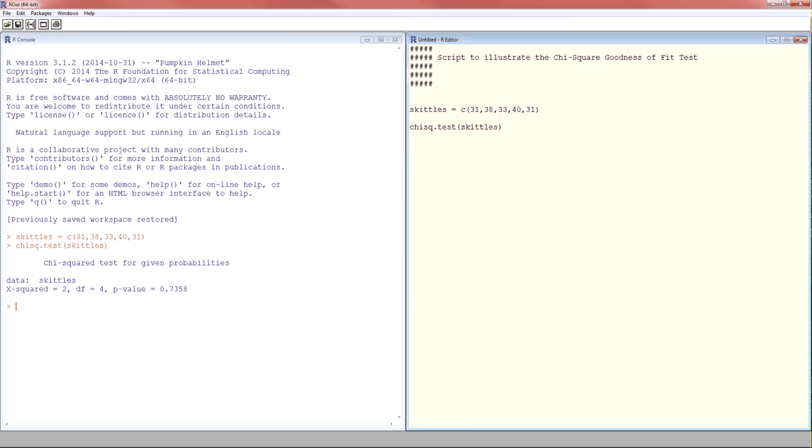By default, it tests the hypothesis that the proportions are all equal. So the results, the X squared value is 2, degrees of freedom is 4, the number of colors is minus 1. P value is 0.7358. P is greater than alpha. Failed to reject null hypothesis. The data do not tell us that the corporation is wrong.